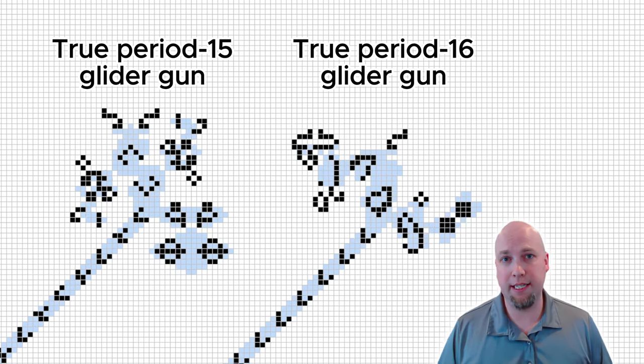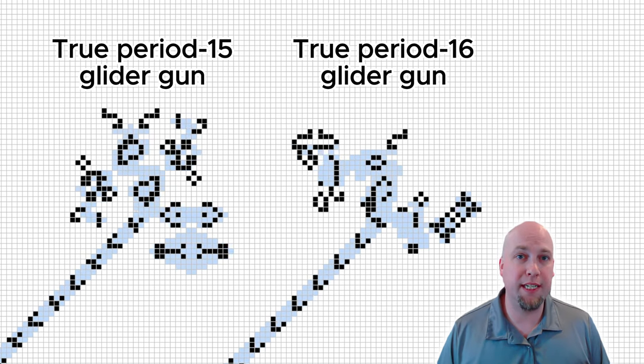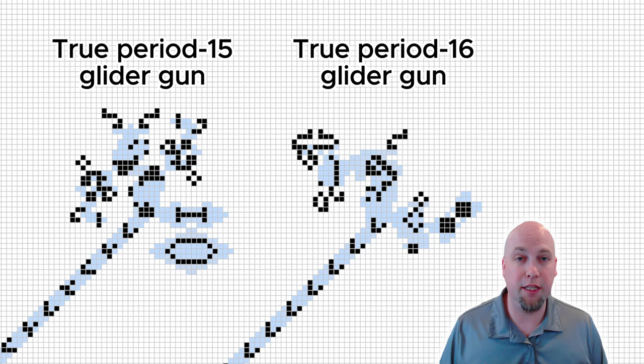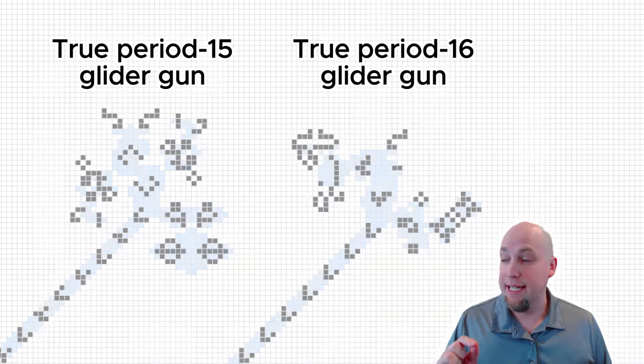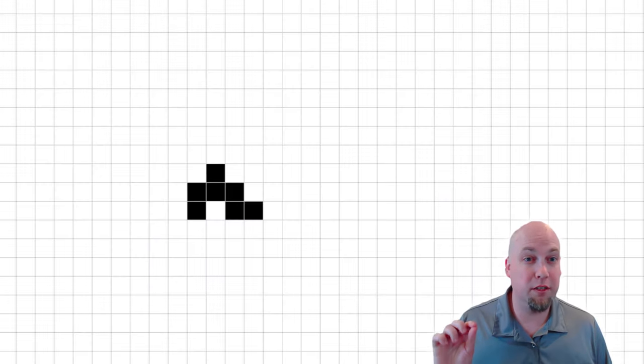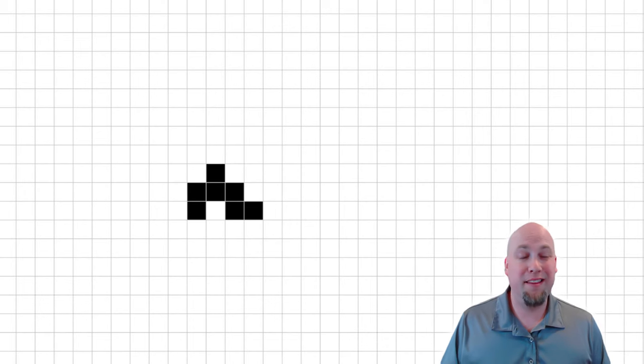So what goes into making these glider guns, and why were they found so close together? What's the key common ingredient between them? And that key common ingredient is this funny little configuration here, which is called the B-heptomino.